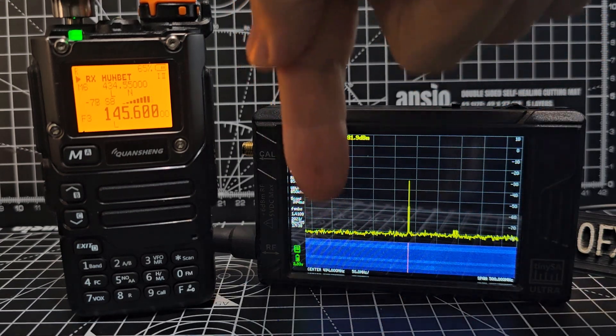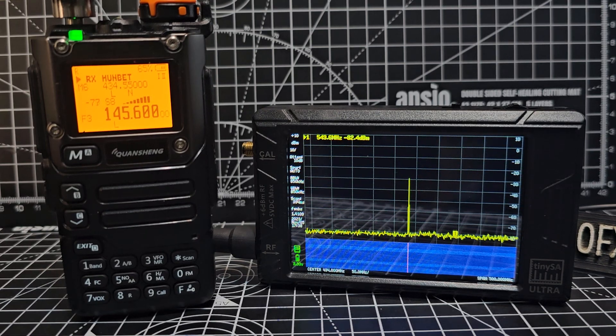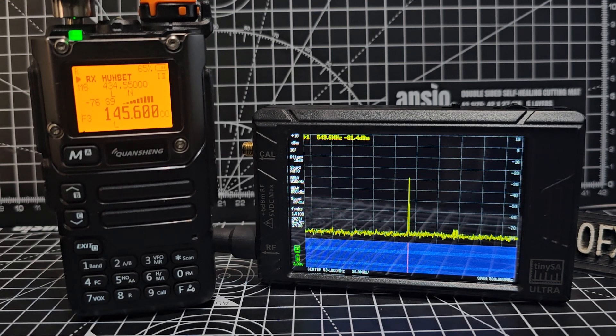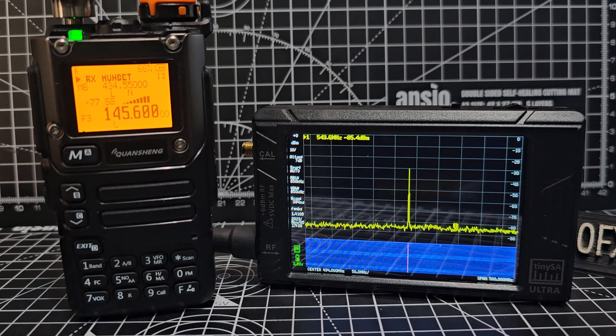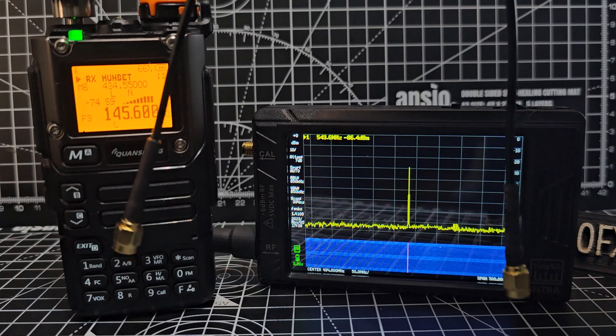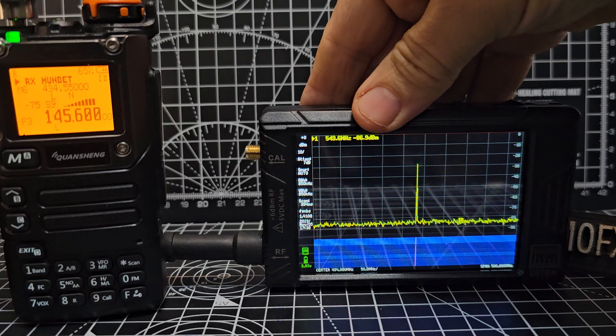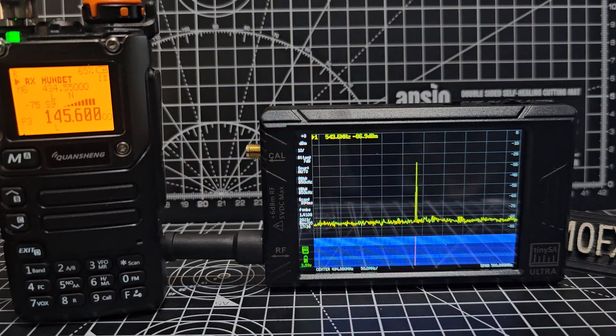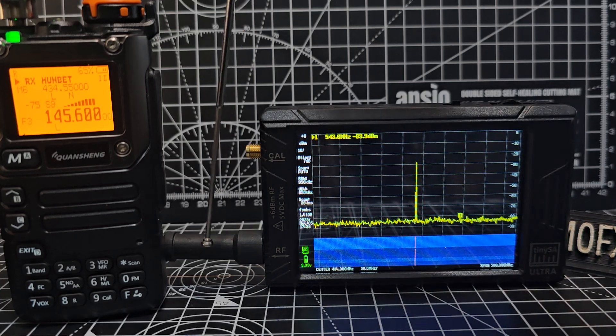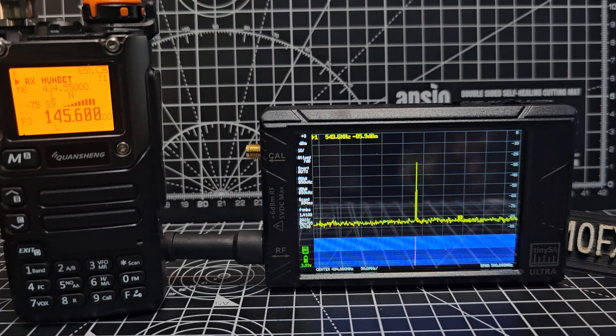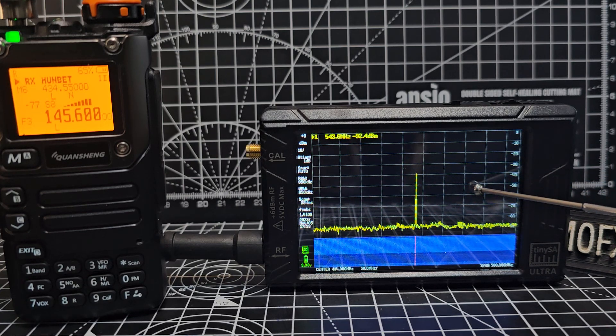The first thing we did was calibrate it. How did we do that? We had to use this cable here, SMA to SMA, to connect the two SMA connectors where the antenna is now. You can see just here, and there's the other SMA. We connected them together.